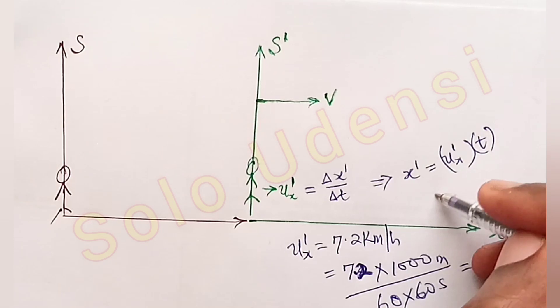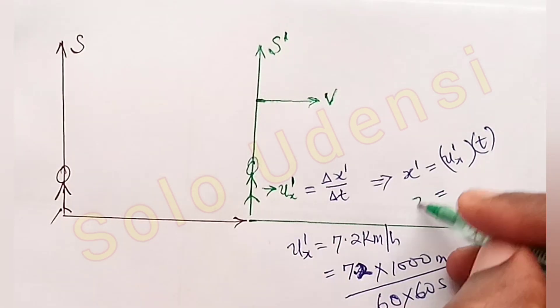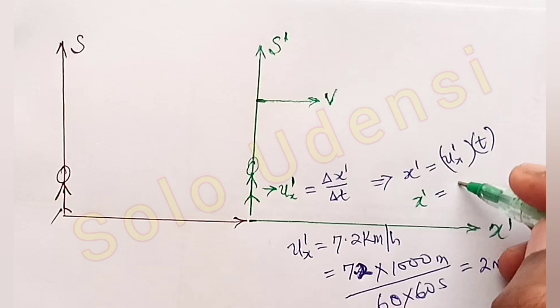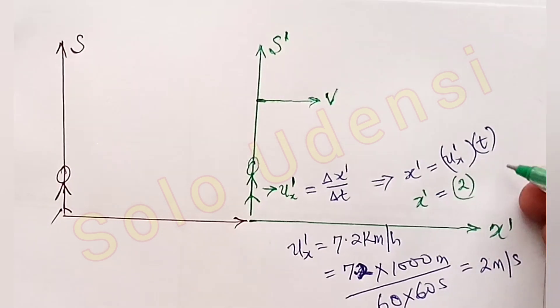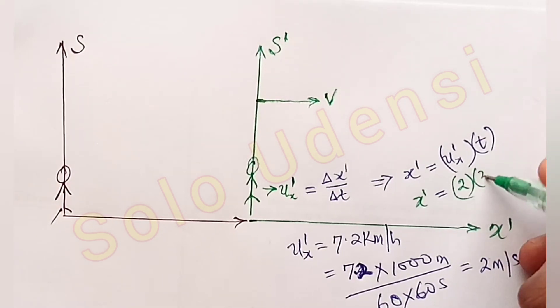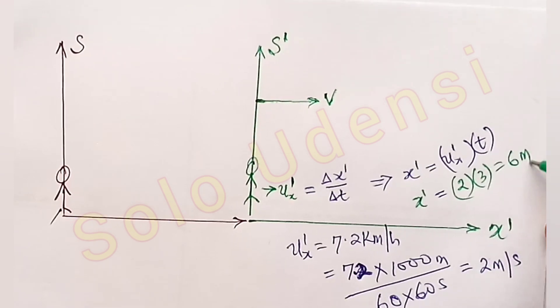So that means that our X' is equal to 2 meters per second. After 3 seconds, it will be 6 meters in that bus.